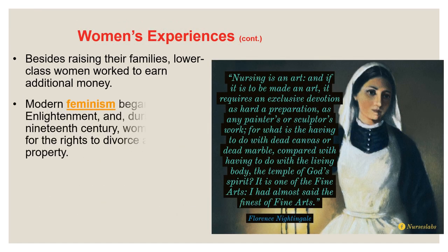Some lower-class women also had to work to earn additional money, working in factories or as domestic servants. Modern feminism began during the Enlightenment with Mary Wollstonecraft's Vindication of the Rights of Women — Mary Wollstonecraft being the mother of Mary Shelley, who wrote Frankenstein. During the 19th century, women started arguing for the rights to divorce and to own property outright.